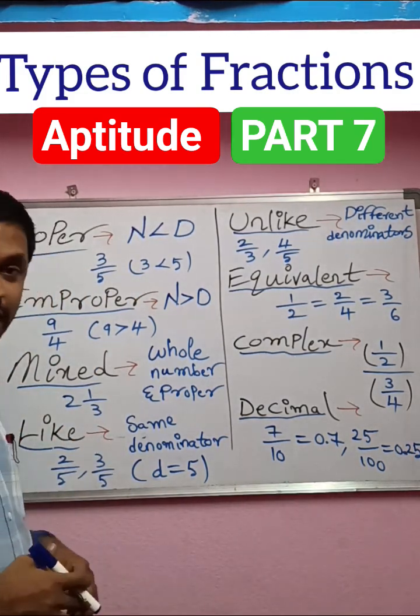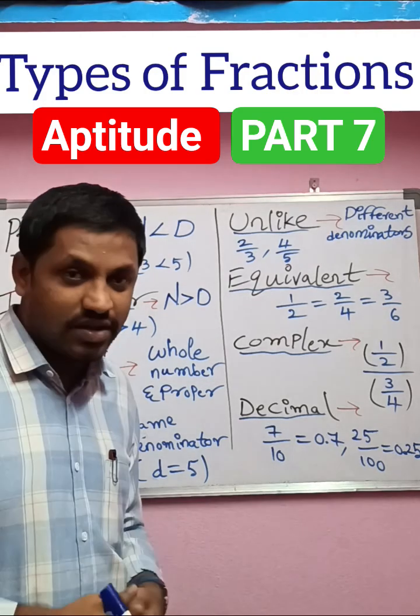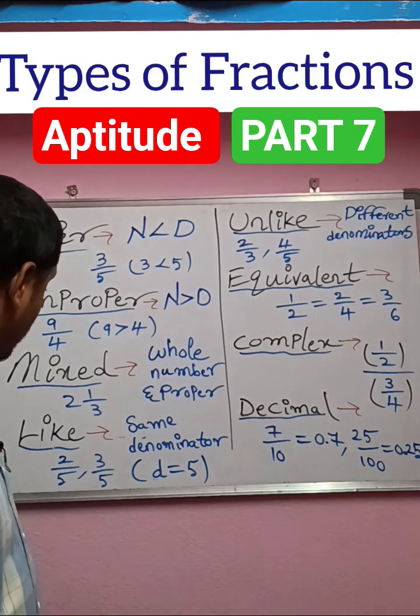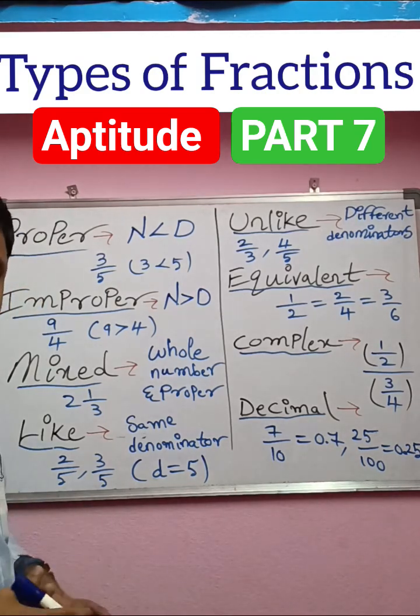Next is like fraction. The fractions having same denominator. For example, 2 by 5, 3 by 5. Denominator is same, then it is said to be like fractions.